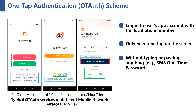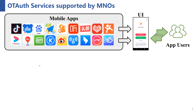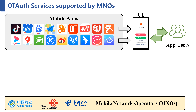Given the huge convenience of One-Type Authentication, many popular apps have introduced it. The most unique part of this scheme is that the local phone number is obtained neither through user input nor by requiring any system permissions. The local phone number is obtained based on the capability of mobile network operators, which we will refer to as MNO for short. In other words, if an app wants to integrate One-Type Authentication, it has to use the MNO's service.